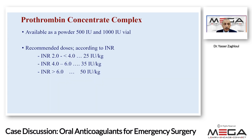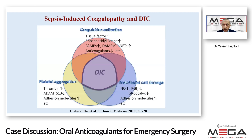According to the American Thrombosis Society, recommended PCC doses based on INR are: for INR 2–4, give 25 units/kg; for INR 4–6, give 35 units/kg; and for INR greater than 6, give 50 units/kg. We used 25 units/kg in our patient, which was very effective in reversing the anticoagulation.